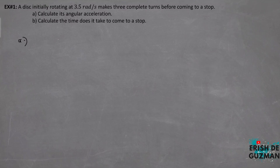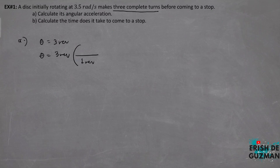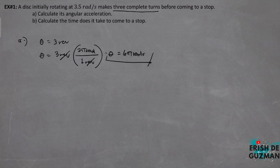For letter A, given sa atin yung angular position theta in revolution. Ang sabi dito, three complete turns, ibig sabihin niyan tatlong revolution. And i-convert natin sa radians, dahil kapag gagamitin na natin yung equations for angular quantities, dapat nakaregion yung position. So we have to convert it: three revolutions times the factor na one revolution equals two pi radians. Cross out natin yung revolutions — angular position is equal to six pi radians.